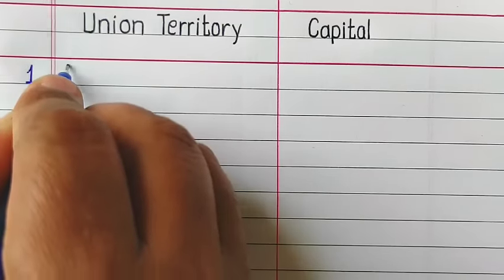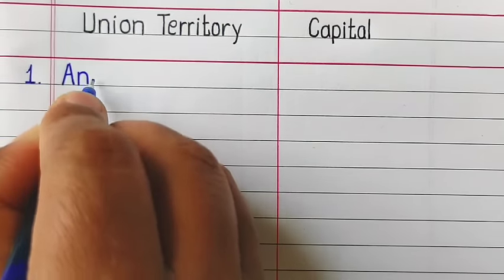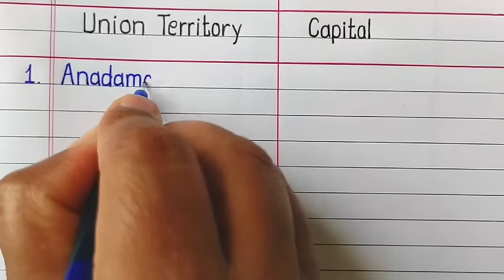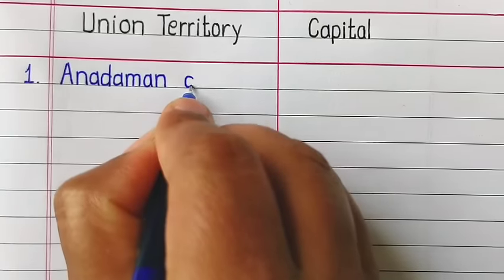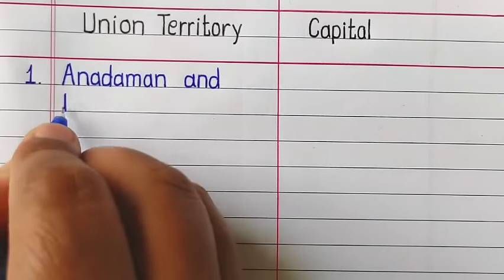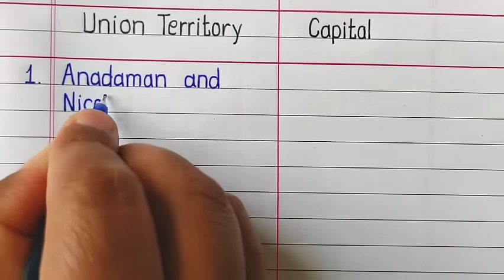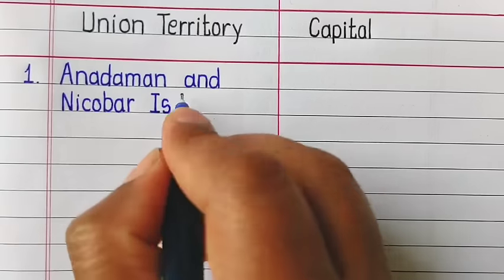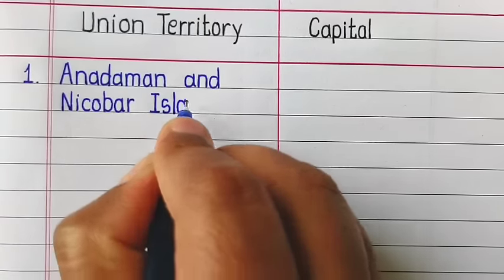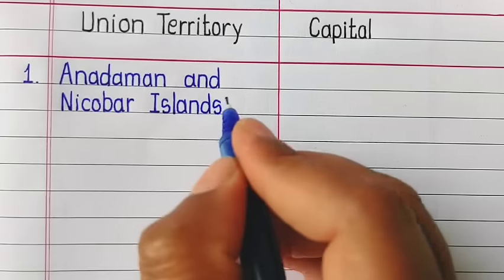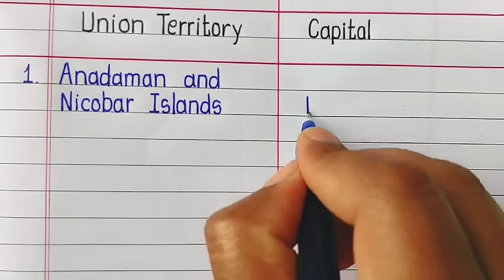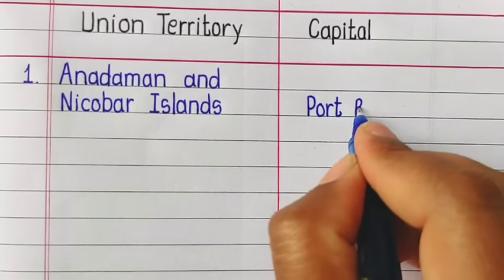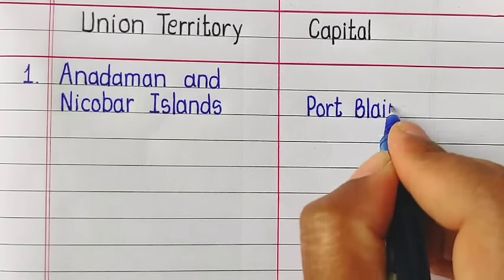Now let us see Union Territories and their capitals. Andaman and Nicobar Islands — Port Blair.